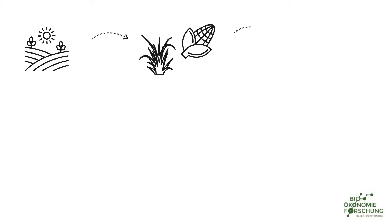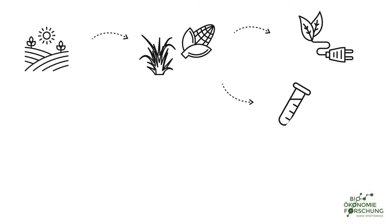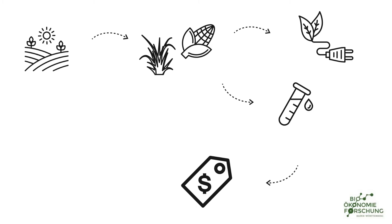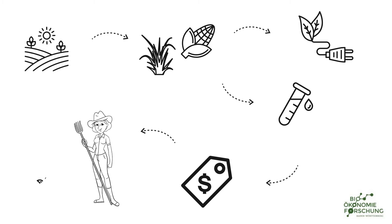Should we use the earth's scarce arable land to grow biomass to produce renewable energy and bio-based chemicals? How does this impact on food prices and how does this in turn affect the seed planning of a farmer in Baden-Württemberg?